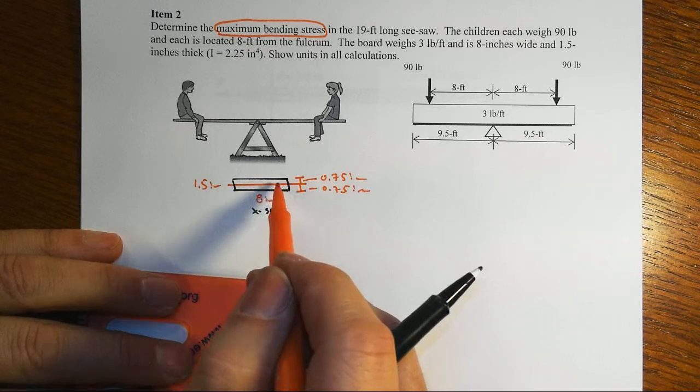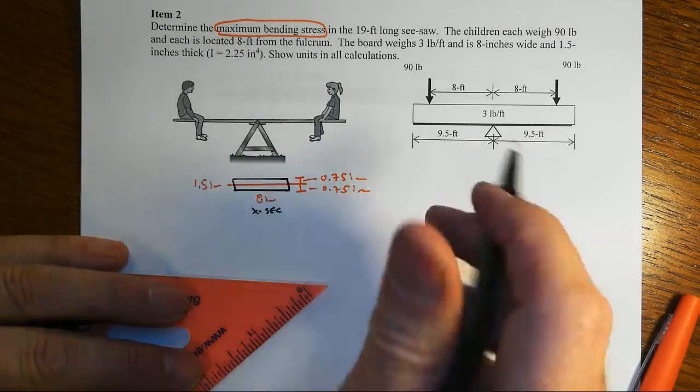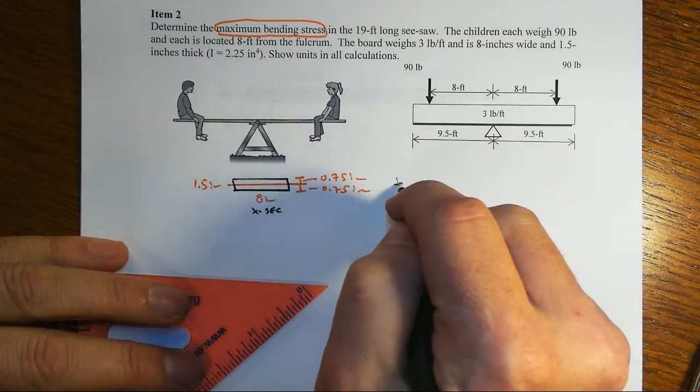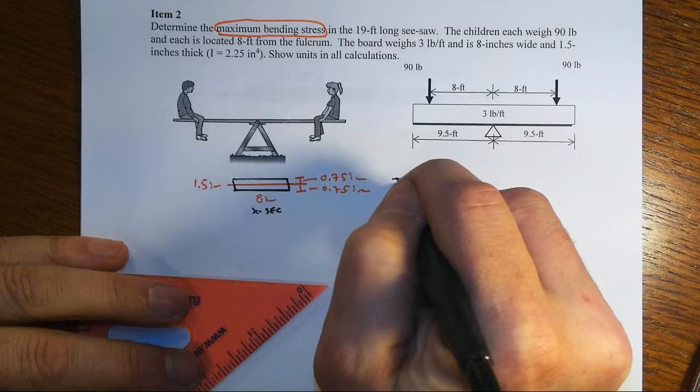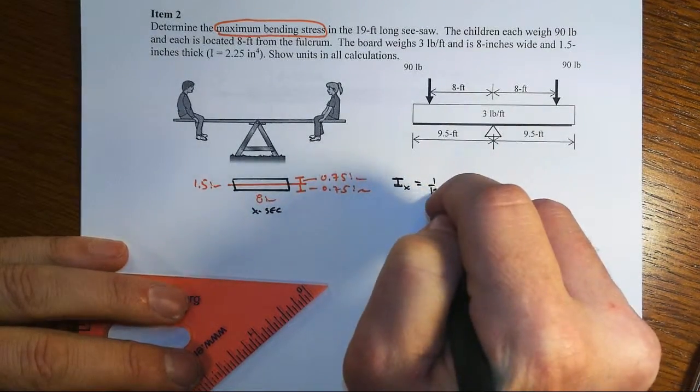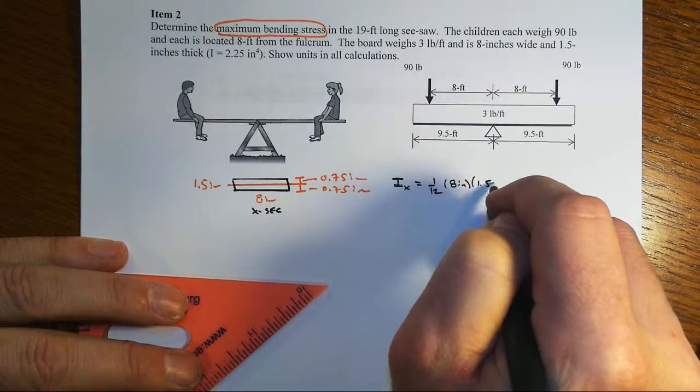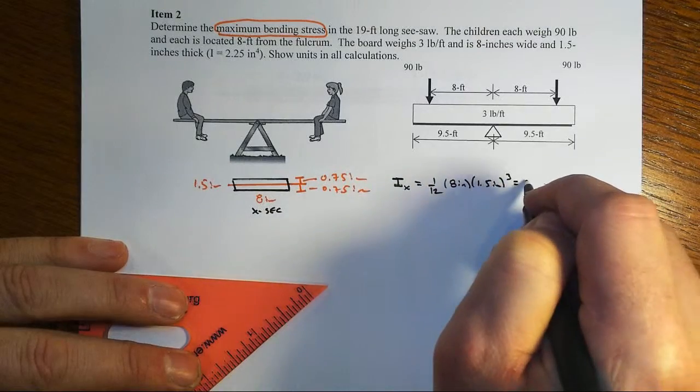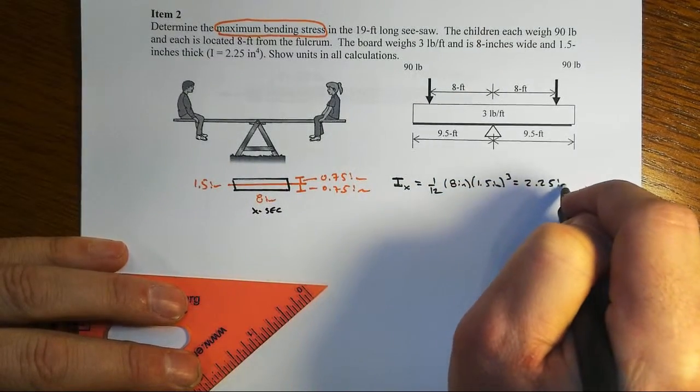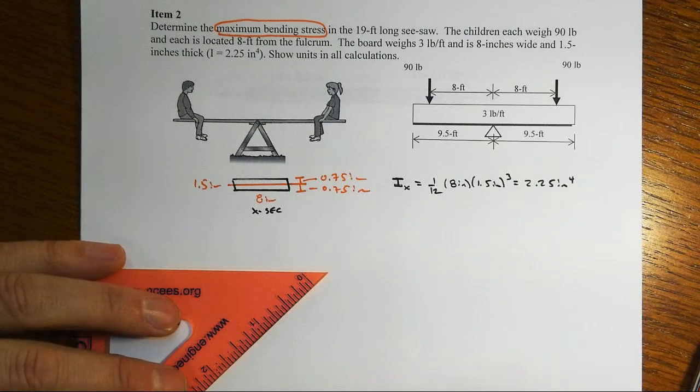laid flat so that we can actually sit on it. We can verify that we've interpreted this correctly by checking the second moment of area, which we have been provided here. Rectangle, so 1/12 of the base times the height cubed, and that indeed equals 2.25 inches to the fourth. So we have correctly interpreted how the problem is set up.